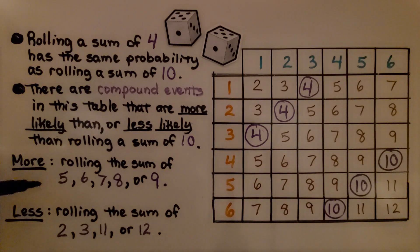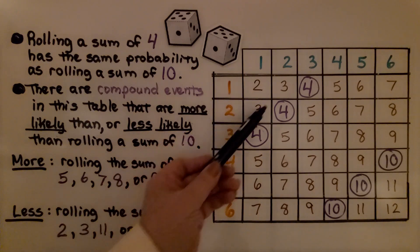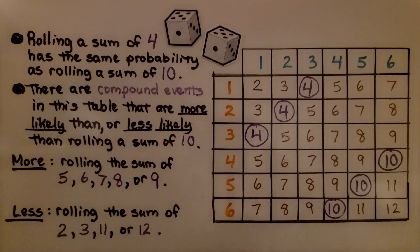Less likely would be rolling the sum of 2 or 3, 11, or 12.